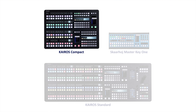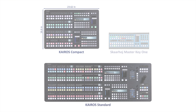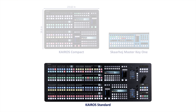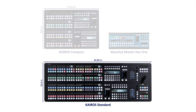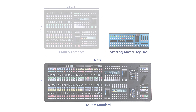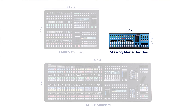In some cases, a compact panel — because of the limited real estate on the desktop surface — is the best way to go. Or the standard panel when you want the most cross-point buttons for flexibility in your production. Still other options might include the Skarhoy when space is at an absolute premium.